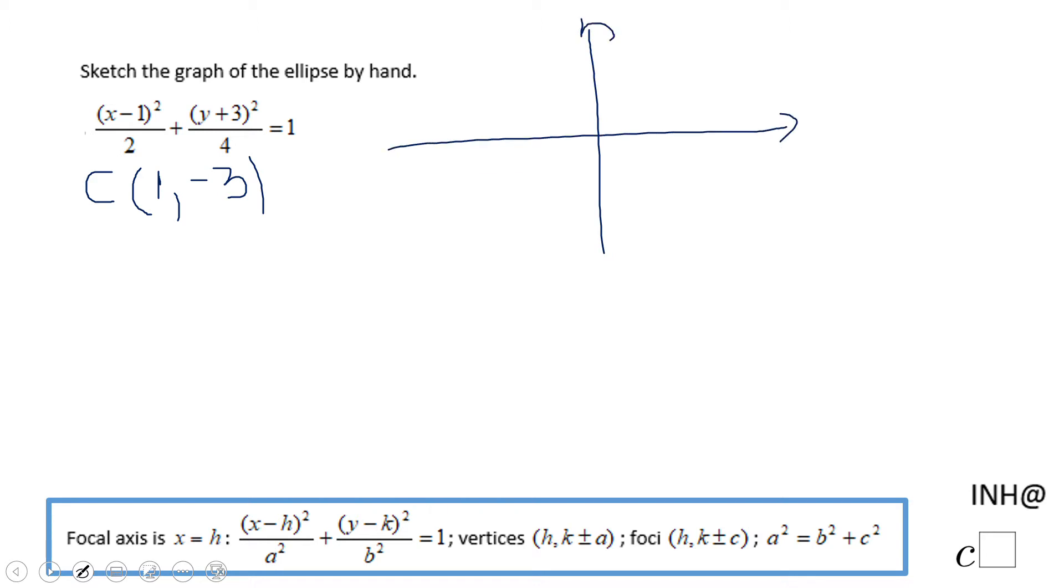I'm going to plot the point 1 and negative 3. That means 1 right and 3 down, so somewhere here is the center. And now we're going to look to a squared and b squared, so let's start with a.